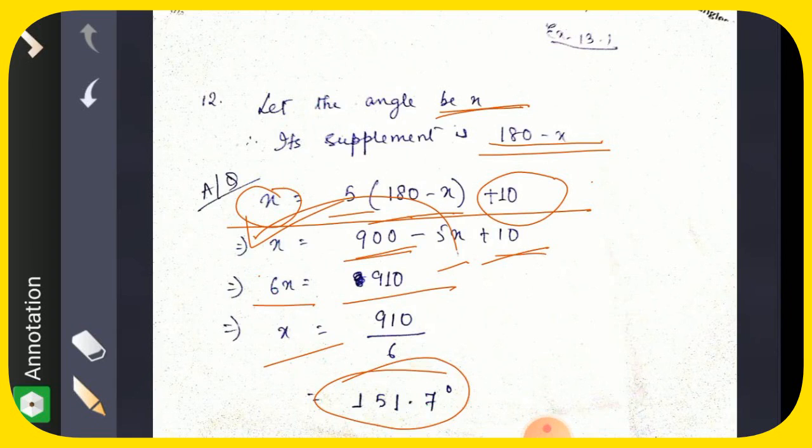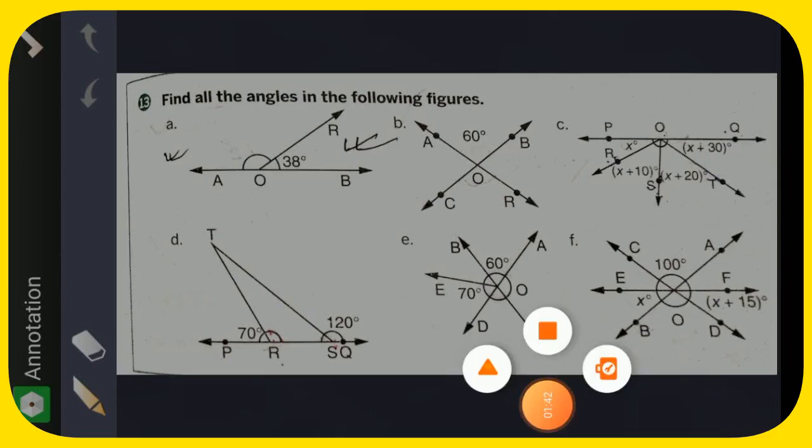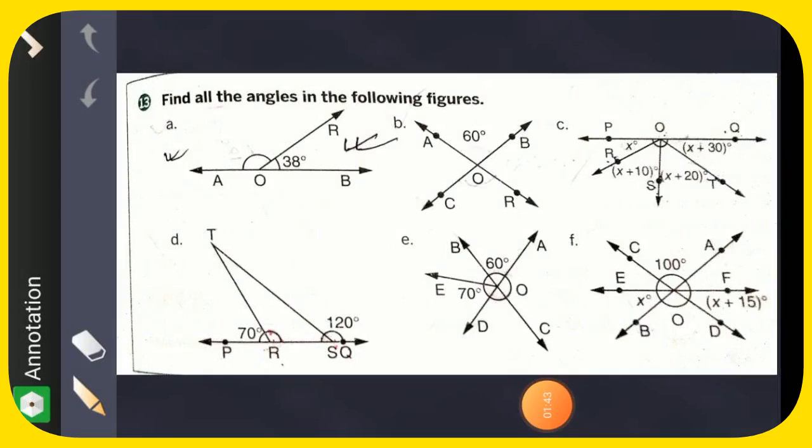Now number 13: you see some diagrams are here and you have to find the angles in the following figures. Suppose this one, total is 180, so this part will be 180 minus 38, very easy. Here you see this one is 60, so if this one is 60, our vertical opposite angles are equal, so this is also 60.